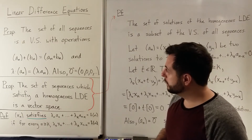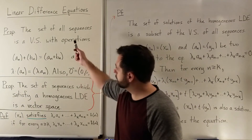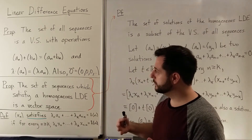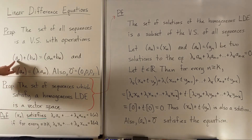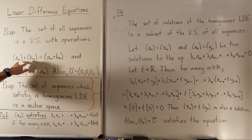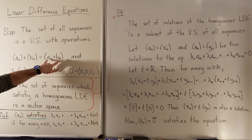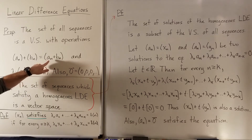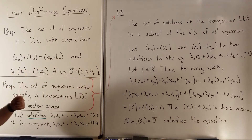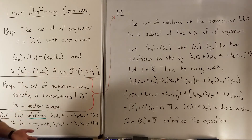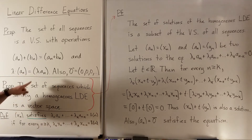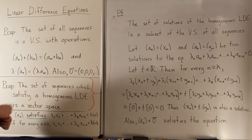We now have a couple of propositions to look at. The first proposition says the set of all sequences is a vector space with these operations. So a_sub_n plus b_sub_n — if I want to add these two sequences together, I just add all of their individual terms. In other words, to find the first term of the sum of two sequences, I take the first term of the first sequence and add it to the first term of the second sequence.